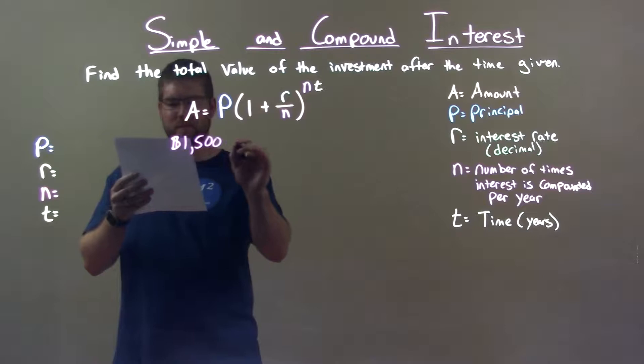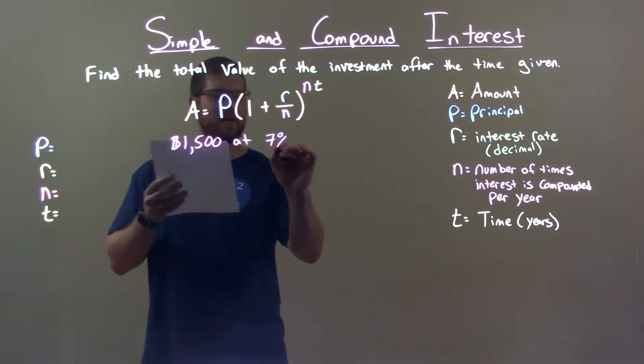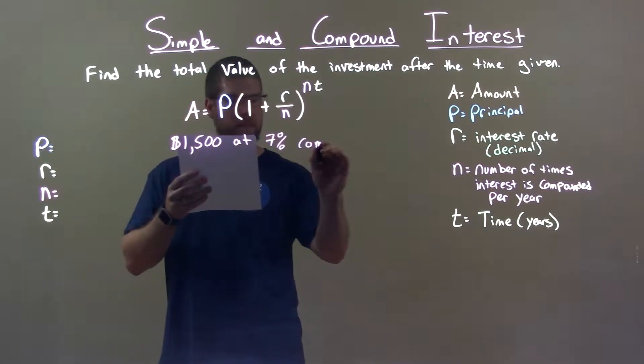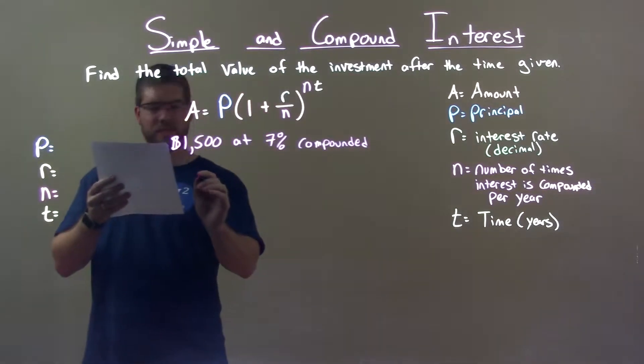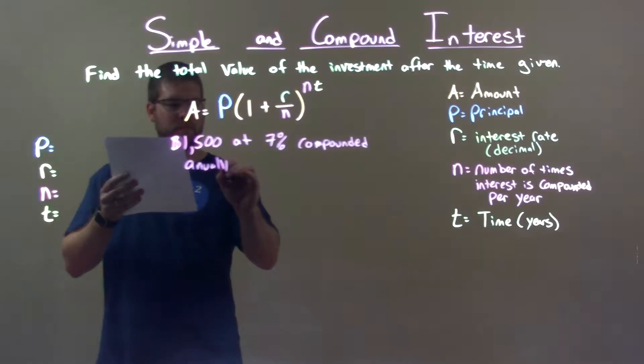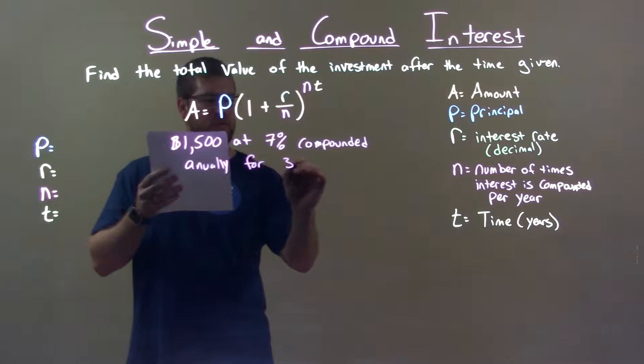$1,500 at 7% compounded annually for three years.